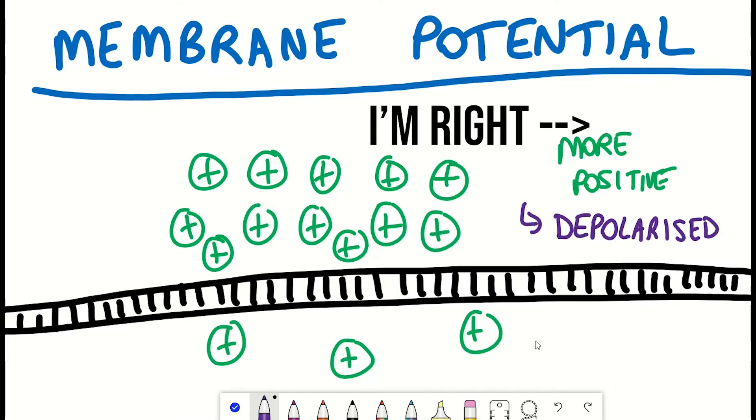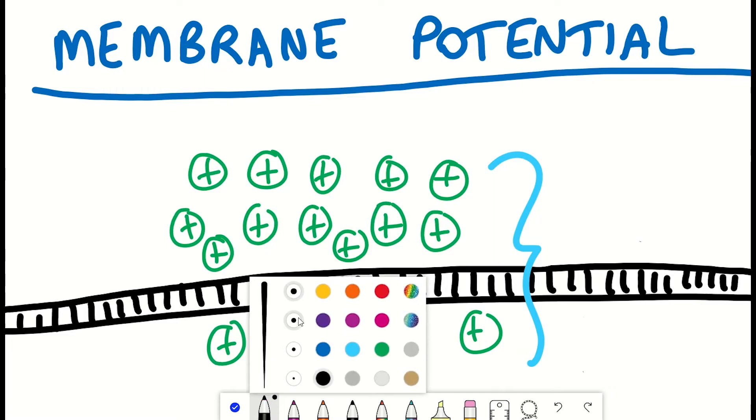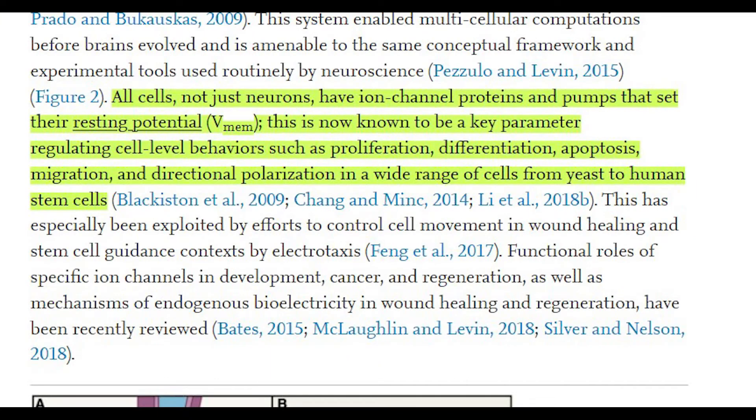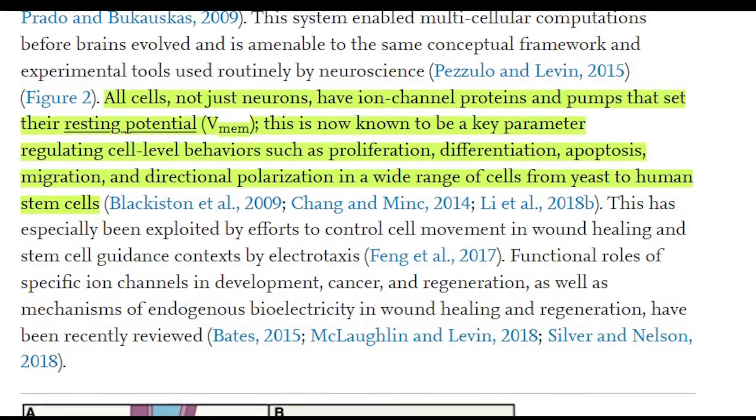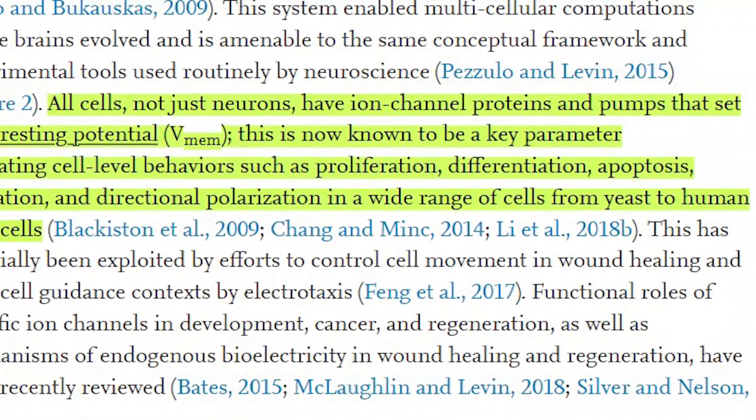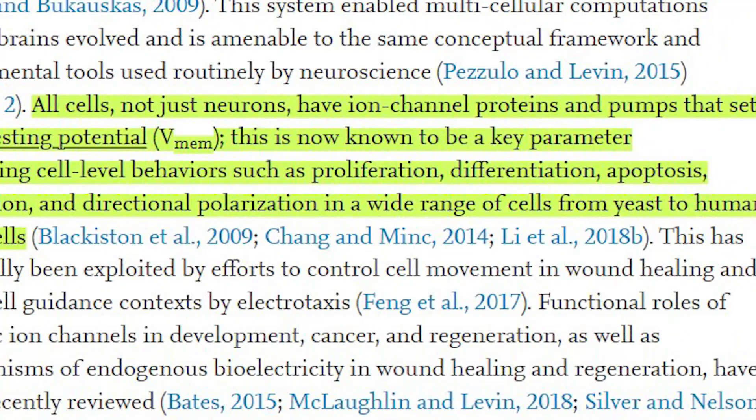And so the kind of fancy way of describing this is to say that if it's more positive, it's hyperpolarized. And if it's more negative, it's depolarized. And so it turns out our cells in normal conditions have a more negative charge on the inside of the cell. And so typically we refer to this as its resting potential. And so altering this electrical potential, making it more or less positive, turns out to be a key parameter in the regulation of cellular behaviors such as cellular replication, cell death, and cell migration.